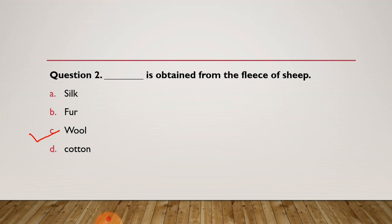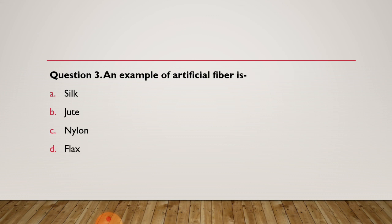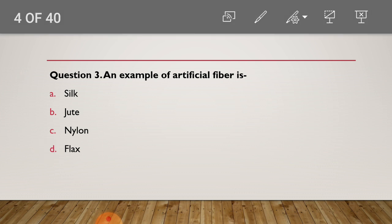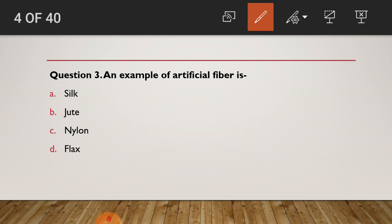Now moving to question number 3: An example of artificial fiber is — is it silk, jute, nylon, or flax? Did you choose your answer from these options? An example of artificial fiber is nylon.